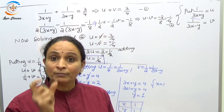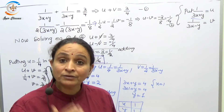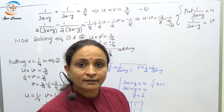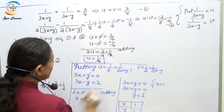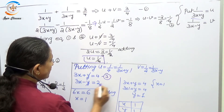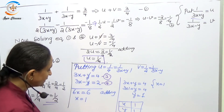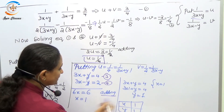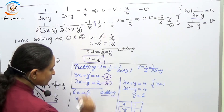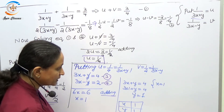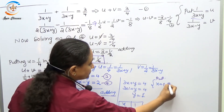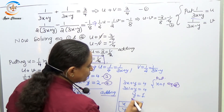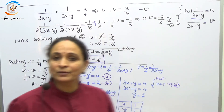Since u = 1/(3x+y) = 1/4, we get 3x+y = 4 (equation 3). Since v = 1/(3x−y) = 1/2, we get 3x−y = 2 (equation 4). Adding equations 3 and 4: 6x = 6, so x = 1. Substituting x = 1 into equation 3: 3(1) + y = 4, so y = 1. Final answer: x = 1 and y = 1.